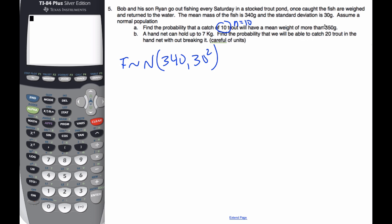will have a mean weight of more than 350. So I want to find the probability that my mean fish is bigger than 350 grams. To do so, that means I need to find F bar. So F bar will be, let me write it so we can read it,